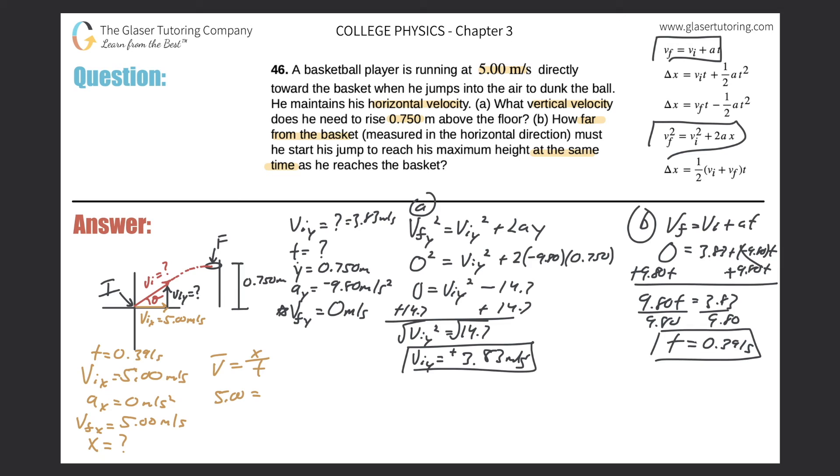Simply do your cross multiplication. Take five and multiply it by 0.391. And we get an answer of 1.96 meters. So he should begin his jump 1.96 meters before the basket.